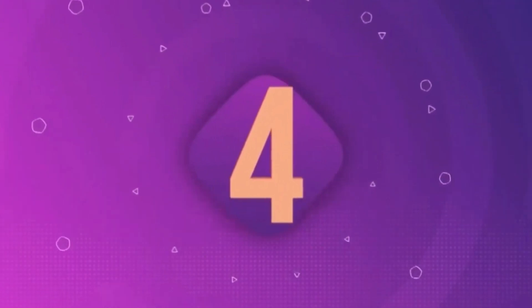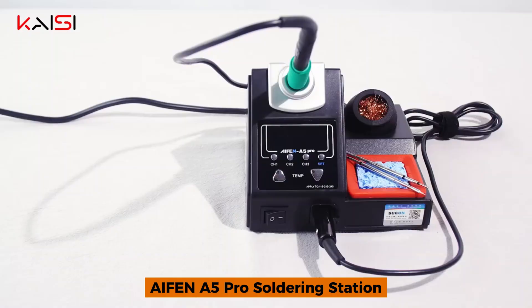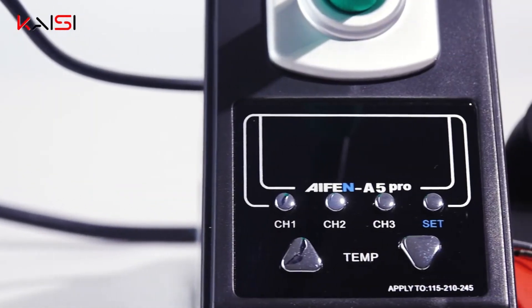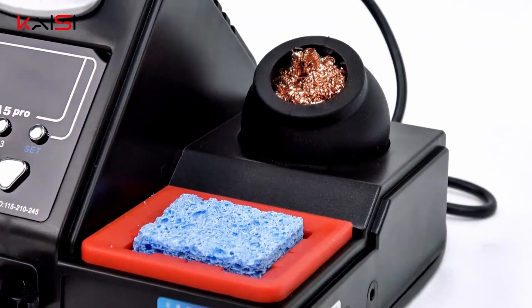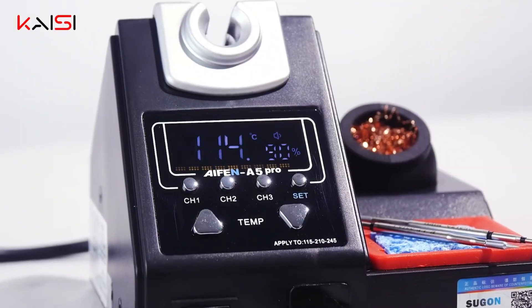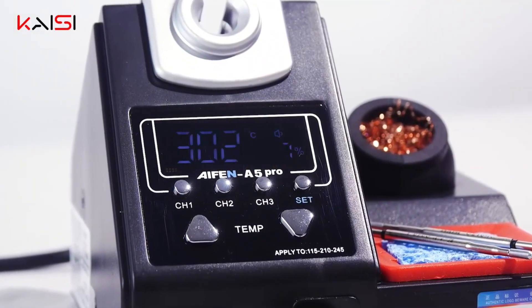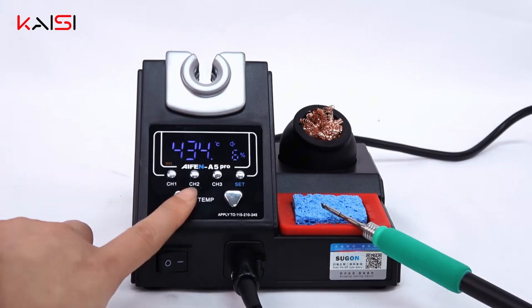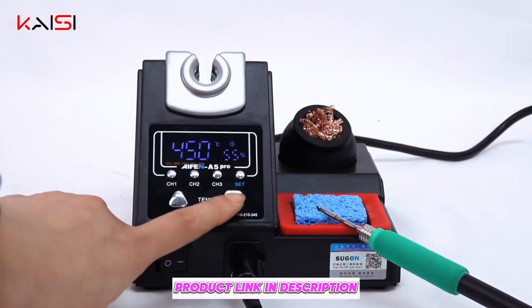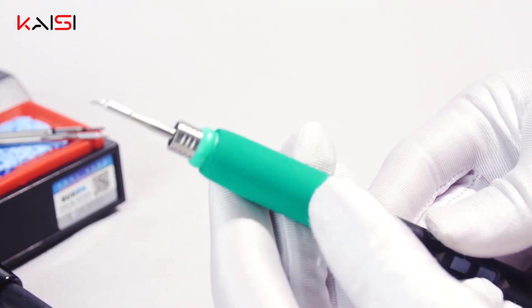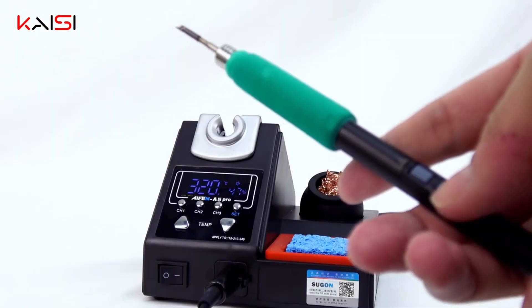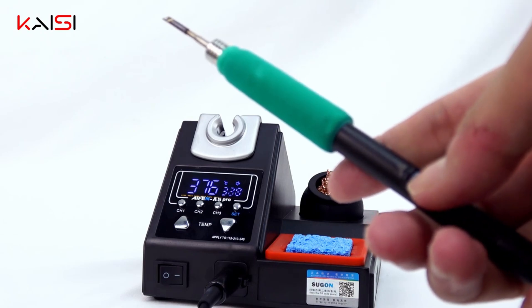Number 4 Afana 5 Pro Soldering Station. The Afana 5 Pro is all about compatibility and precision. It supports multiple soldering tips, C2-Teen, C2-45, and C1-15, and features a sleek LCD digital display for easy temperature control. With 120W of power, it's a solid choice for professionals and advanced hobbyists alike.